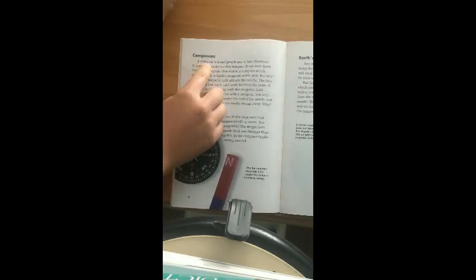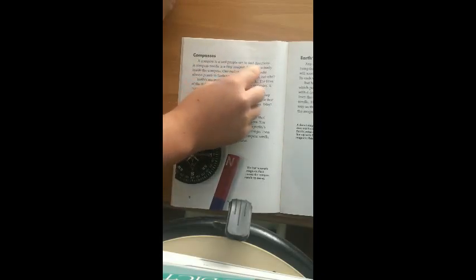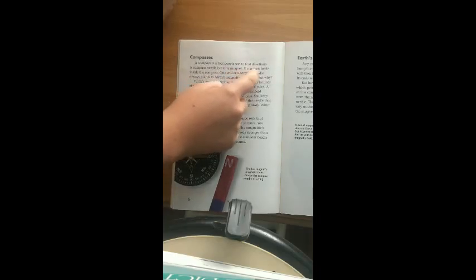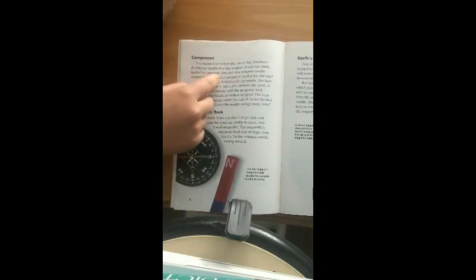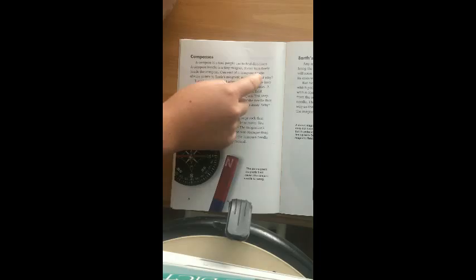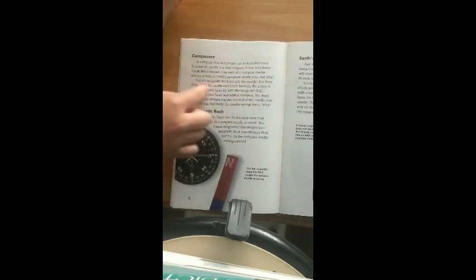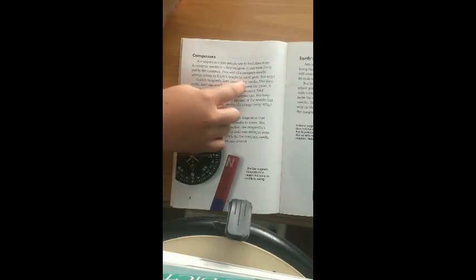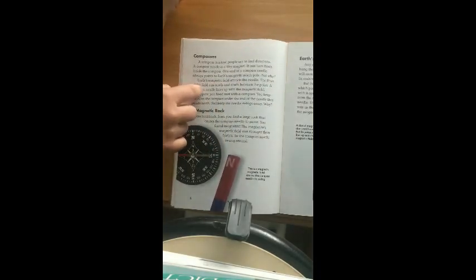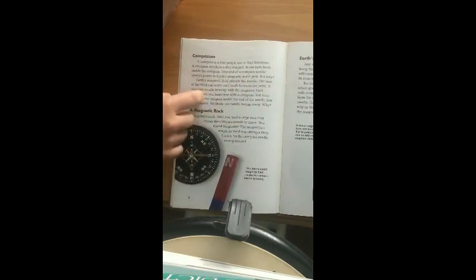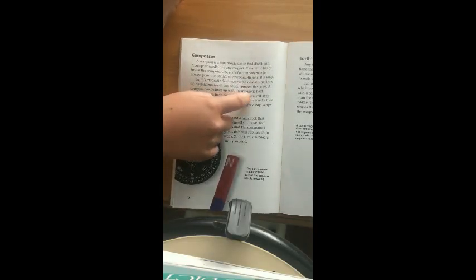Compasses. A compass is a tool people use to find direction. A compass needle is a tiny magnet. It can turn freely inside the compass. One end of a compass needle always points to the Earth's magnetic north pole. But why? Earth's magnetic field attracts the needle. The lines of the field run north and south between the poles. A compass needle lines up with the magnetic field.